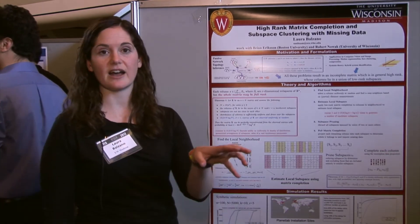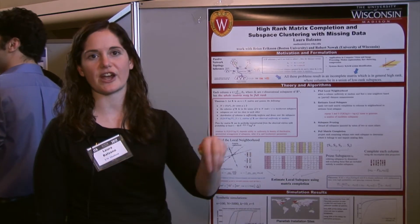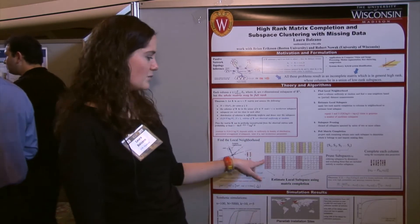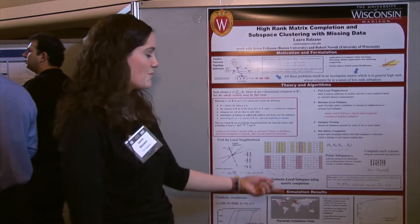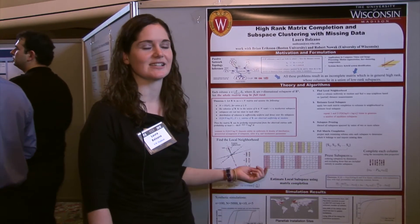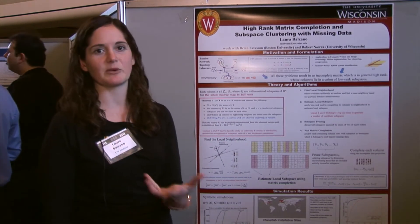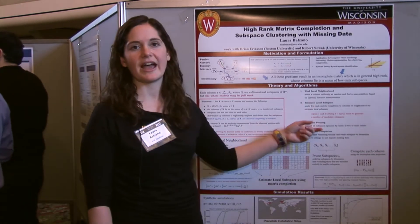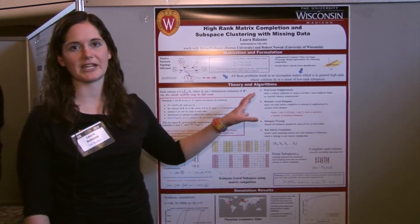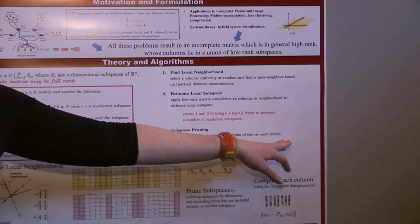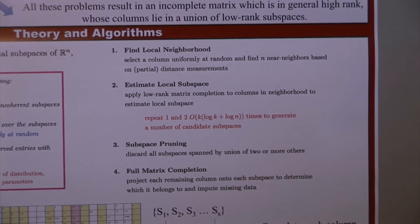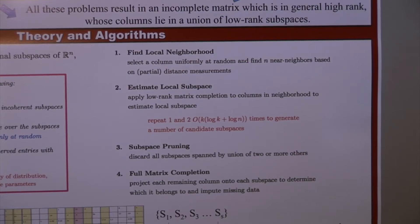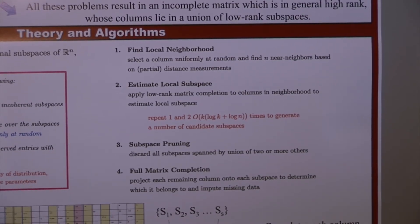From there, we find local neighbors — columns which are not very far in distance from the seed columns. We build a submatrix like the one here, which may be a low rank submatrix. From those candidate submatrices, we use matrix completion to find what subspace is spanned by those columns, even though those columns are incomplete. Then we have a set of candidate subspaces, and we can prune those subspaces by first discarding subspaces that are larger than the maximum rank given, and then by discarding subspaces that are a union of two or more subspaces we've already included in the set.